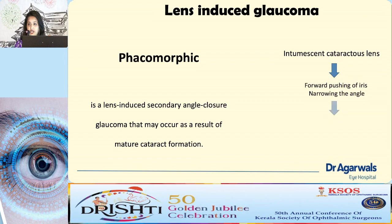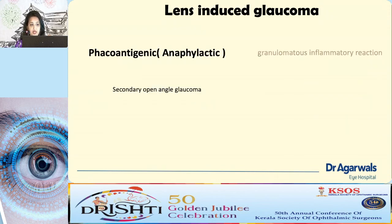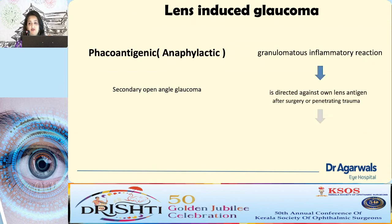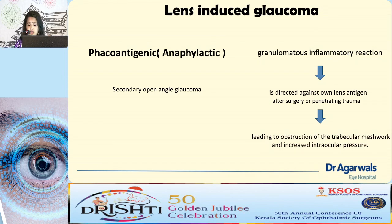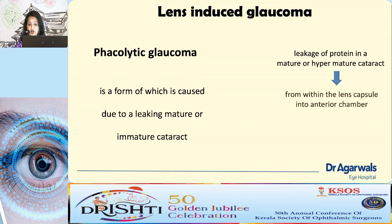There are three types of lens-induced glaucoma. Phacomorphic glaucoma causes secondary angle-closure due to the enlarged lens pushing the iris forward and narrowing the angle. Phacoantigenic glaucoma (previously called phacoanaphylactic) involves lens antigens acting as immune complexes following surgery or penetrating trauma, causing trabecular obstruction and open-angle glaucoma — mainly an immunocomplex reaction. Phacolytic glaucoma involves leaking of protein material from a hypermature cataract, causing trabecular obstruction leading to inflammatory glaucoma.